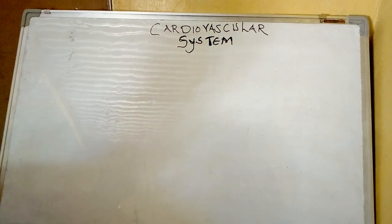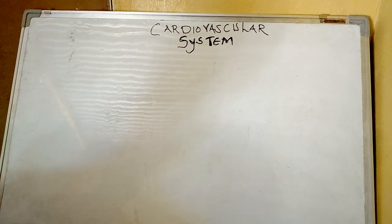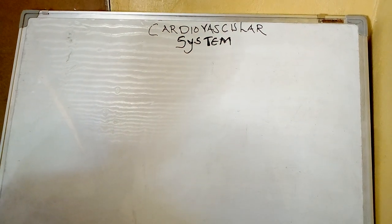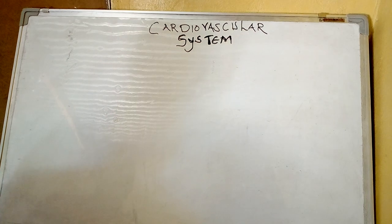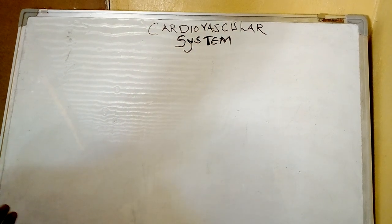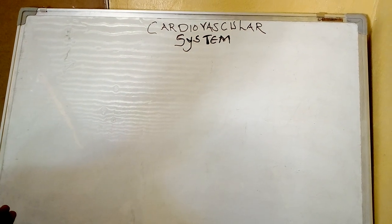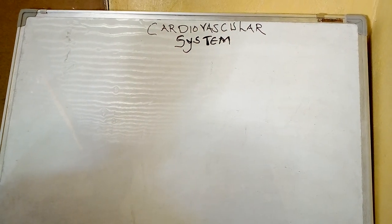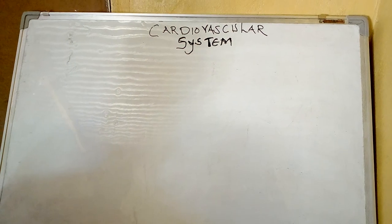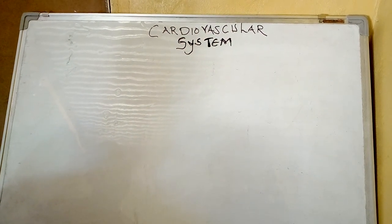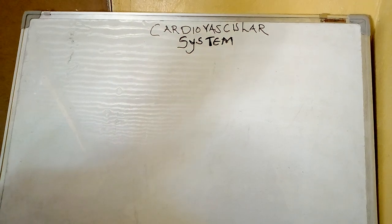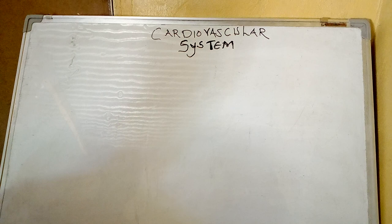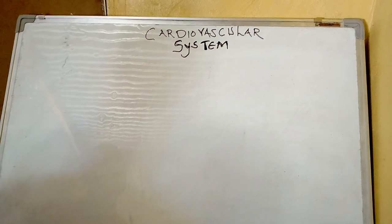When you look at the heart, the human heart is actually divided into two: we have the right side of the heart and the left side of the heart. When you look at these parts of the heart, we also have chambers. The normal human heart has four chambers — the upper two chambers and the lower two chambers. So now let's start by drawing the anatomy of the heart and then we'll do the labels when we finish.